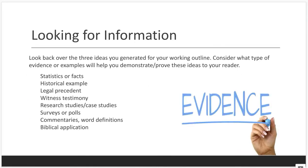All right, now that you have your outline, start thinking about what type of information do you need to prove your thesis statement is true. Do you need something like statistics or facts, historical examples, legal precedents like law cases, court cases, witness testimony, which would be like firsthand eyewitness accounts, things like that. Maybe research studies, surveys or polls, maybe commentaries or definitions of words, or maybe you need the Bible, biblical application, depending on what your topic is. So when doing your research, it helps to know what type of information you're looking for, because that will guide where you do your research.